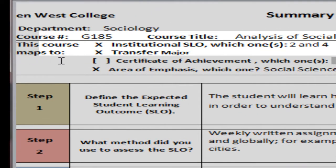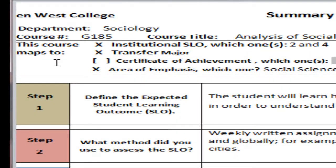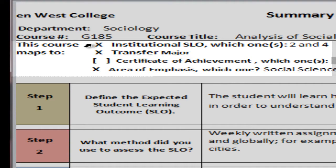This next section is important — it's what the course maps to. For the institutional SLOs, if you look at the alignment Excel spreadsheet that was done for your department, you'll see the courses listed and the specific institutional SLOs that each course maps to. The next one is Transfer Major.